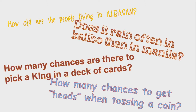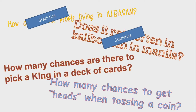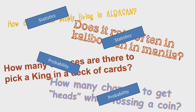Now let's take a look at the first question: How old are the people living in Albasan? In order to answer this question, we need statistics. Does it rain often in Calibo than in Manila? This can also be answered using statistics. How many chances are there to pick a king in a deck of cards? This can be answered using probability. How many chances to get heads when tossing a coin? Also answered using probability.